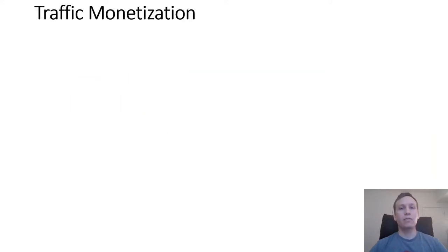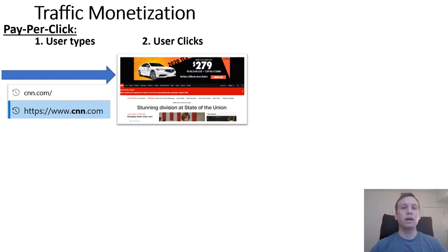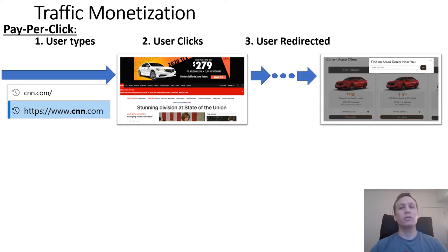I will start by discussing common methods for sites to monetize user traffic. In the case of pay-per-click, when a user visits a site and the site shows ads to this user, only if the user is interested in an ad and clicks on it will the user be redirected through multiple entities to finally arrive on the advertiser's webpage.